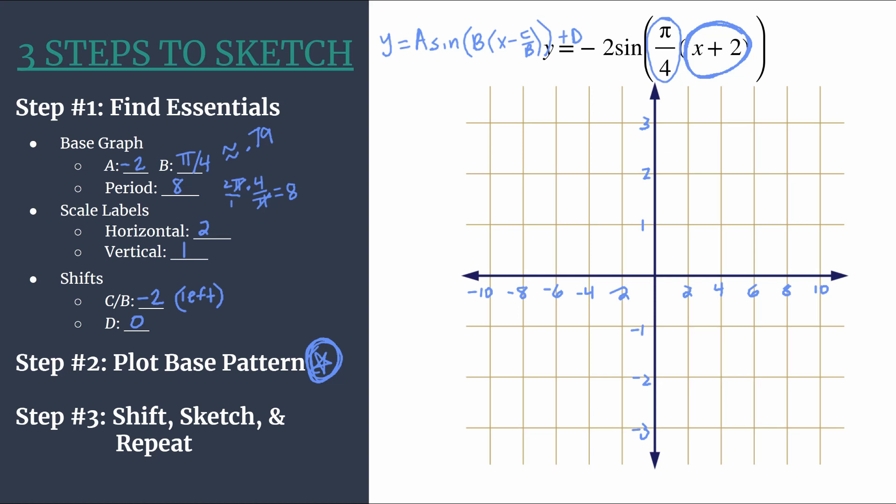Step two is to plot the base pattern. A couple things here: first make sure you do this lightly or in a different color. This is not your final graph. This is our starting point or sometimes I call it an intermediate graph. I will use light blue to plot this. Another thing I'm immediately noticing at this step is that we have that star to remind us of that vertical reflection, and that just impacts our base pattern. So y equals sine x has a base pattern of zero, maximum, zero, minimum, and if you flip that over the x-axis it becomes zero, minimum, zero, maximum. So not a huge change but definitely worth noting.